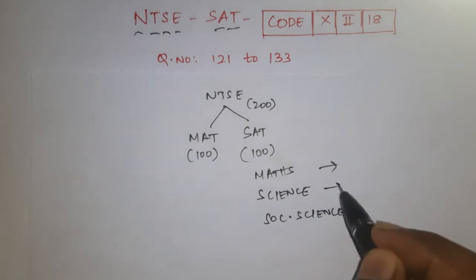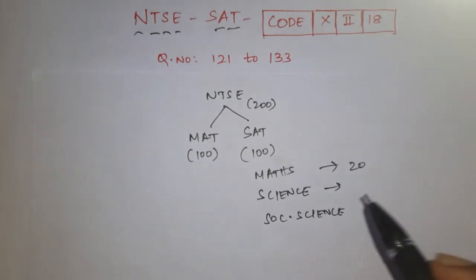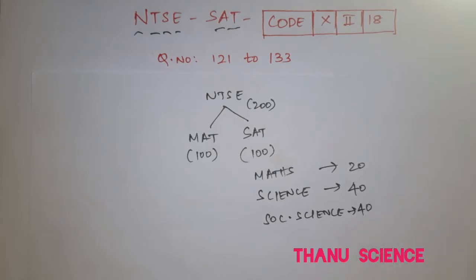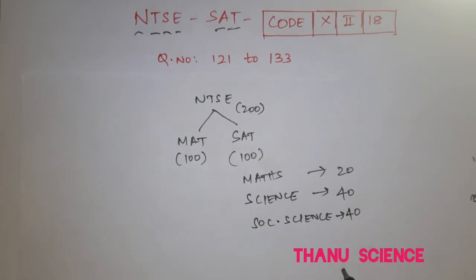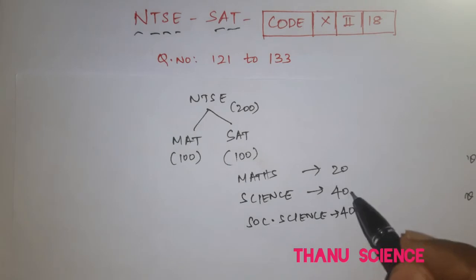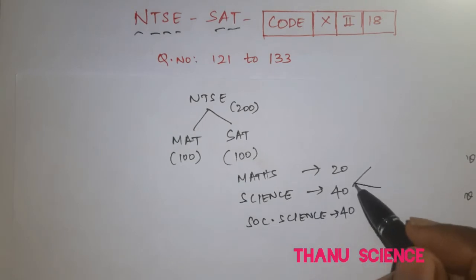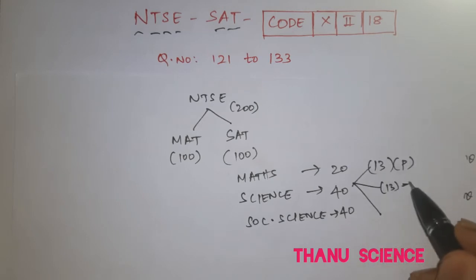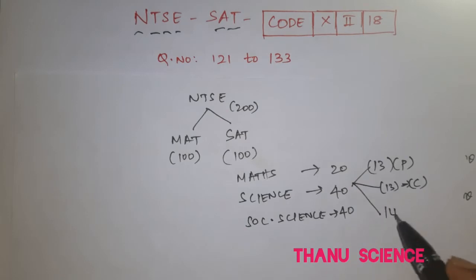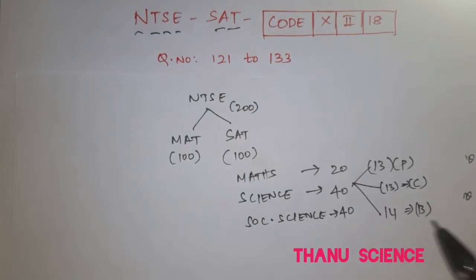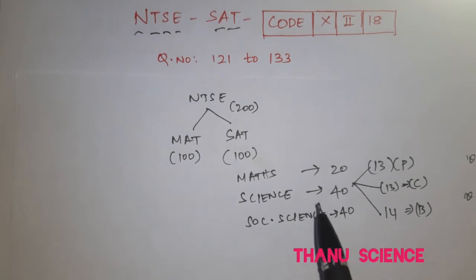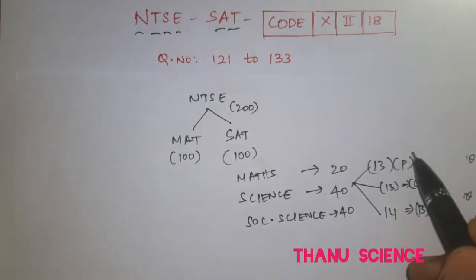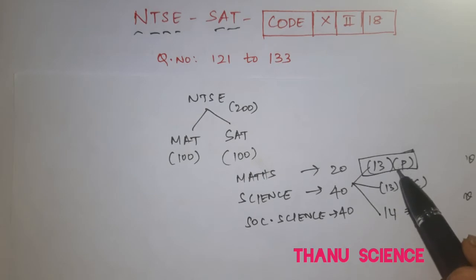For Maths, 20 marks will be allotted — that means 20 questions. For Science, 40 questions will be allotted. For Social Science, 40 questions will be allotted. Each question carries one mark. This 40 marks in Science is split into three parts: 13 marks for Physics, 13 marks for Chemistry, and remaining 14 marks for Biology. In this video, we will learn the answers from question number 121 to 133, which is in the part of Physics — only 13 questions.